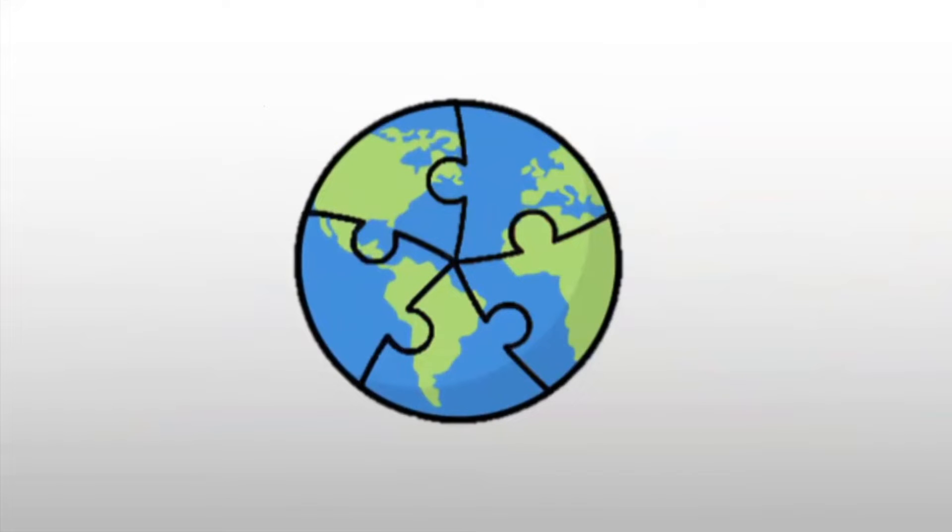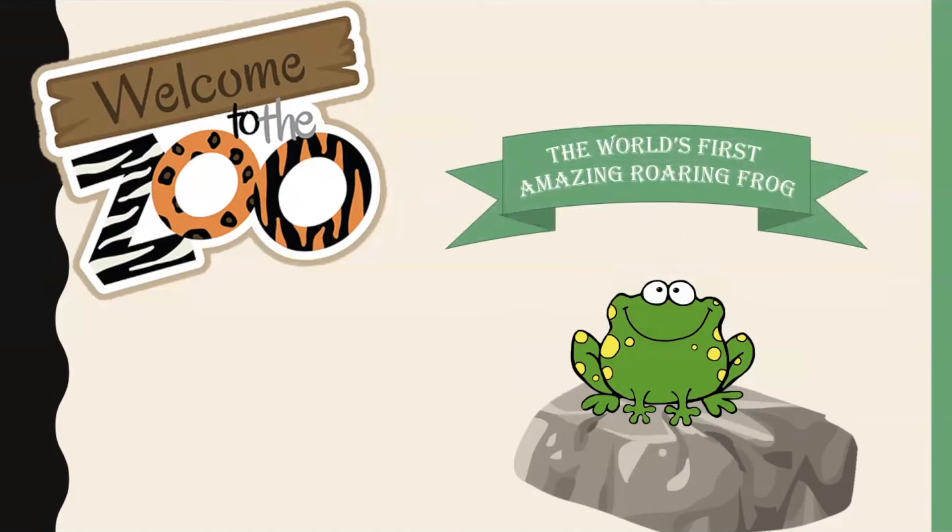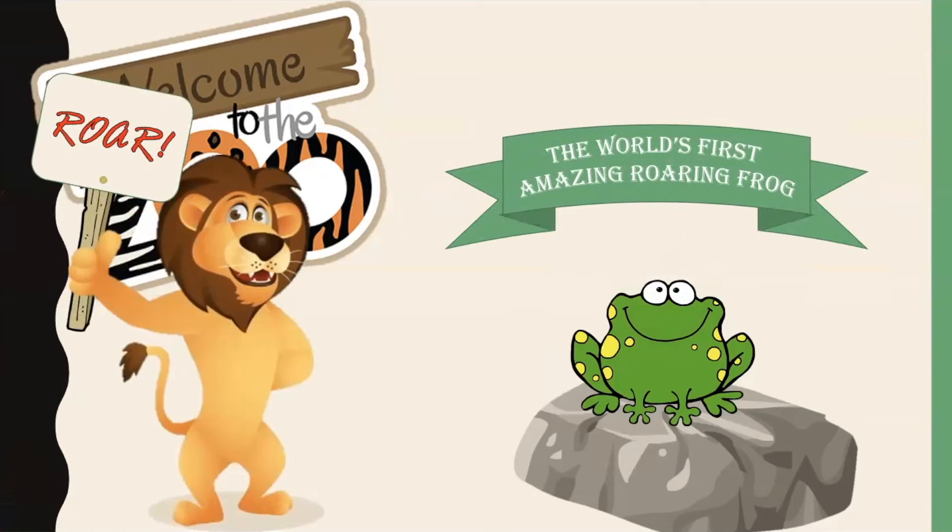The funny thing is, sometimes this can be misleading. For instance, imagine you are at the zoo and you see this frog. Because you saw the mouth move at the same time you heard the sound, your brain will associate these two stimuli together and think for a second it was the frog that was roaring, and not necessarily this lion nearby.